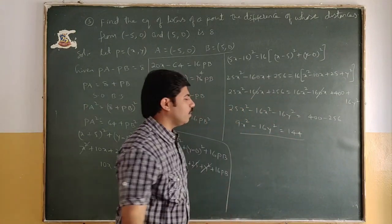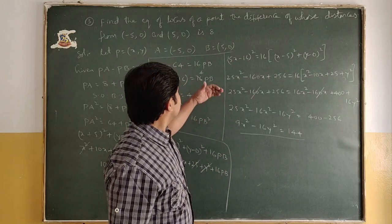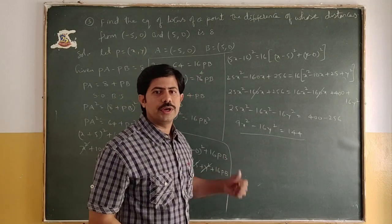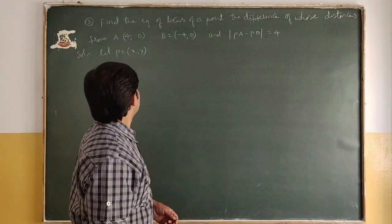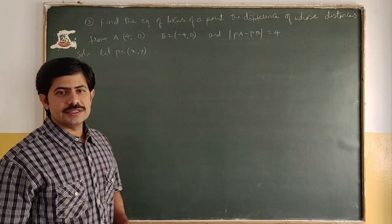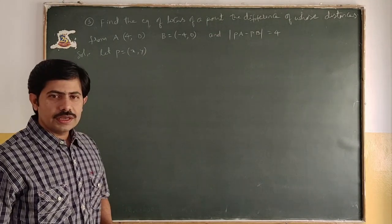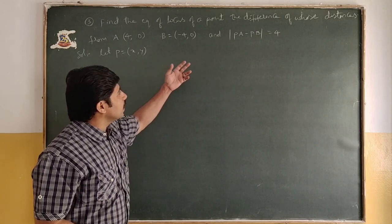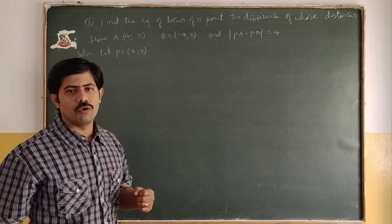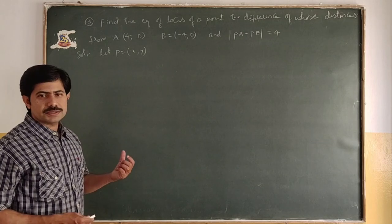This is the required equation of locus. This is a very important problem. The next problem is similar to this one. Find the equation of locus of a point, the difference of whose distances from A(4,0) and B(-4,0) is given as PA - PB = 4.